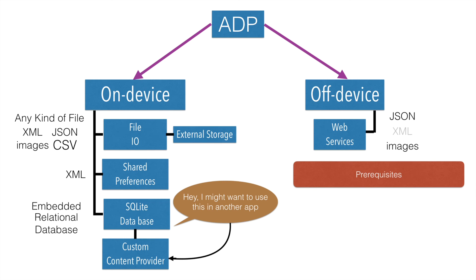To understand some of these topics, you need a proper understanding of certain concepts. If you want to do file IO, you should know Java IO streams: input stream, output stream, buffered input stream, buffered output stream, file input stream, file output stream — all those concepts.